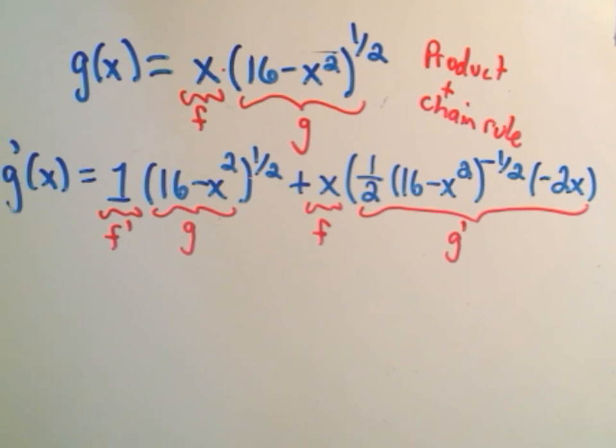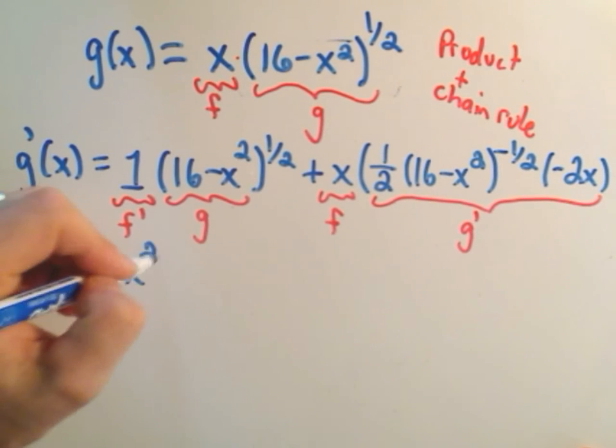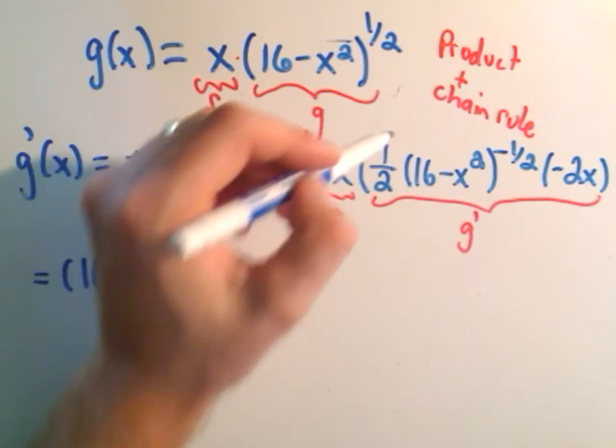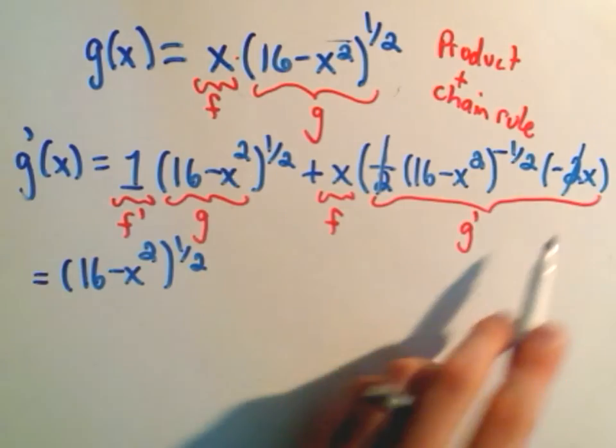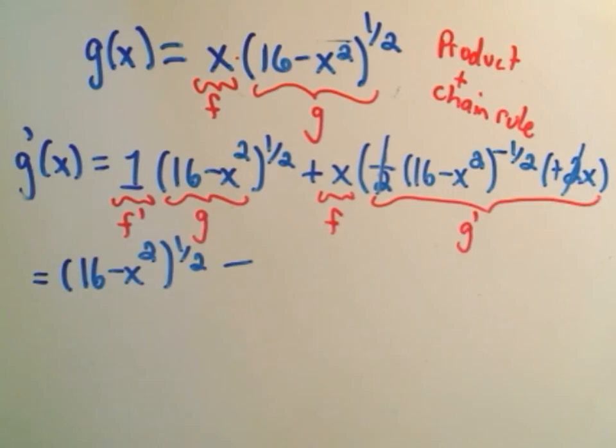So I'm just going to simplify this down a little bit. On the first part, we have 16 minus x squared to the one-half. And then notice I've got a one-half and a negative 2. I'll cancel out the 2. The negative I can bring out front, so that'll take care of the negative.